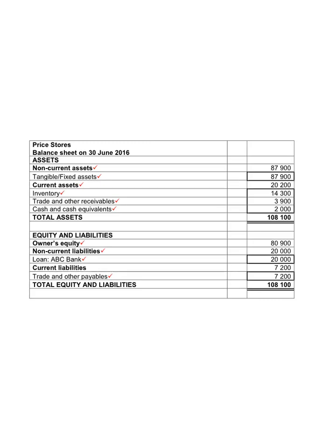The balance sheet will record all the balances on the last day of the financial year. Therefore, you will say 'balance sheet on 30 June 2016' because it's not the total income or total expenses for the whole year — it's the balance on the last day. You always have to show the name of the business and the financial statement that you're completing, so people know whose books they're looking at.